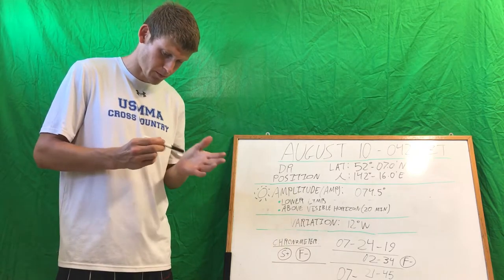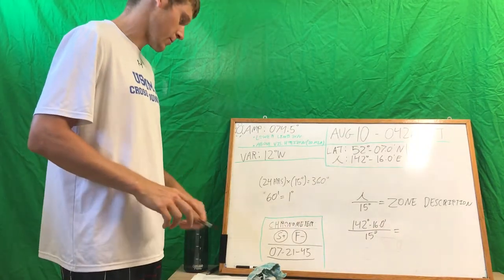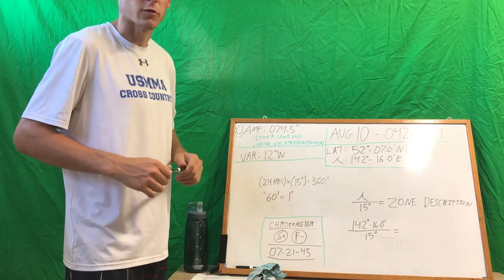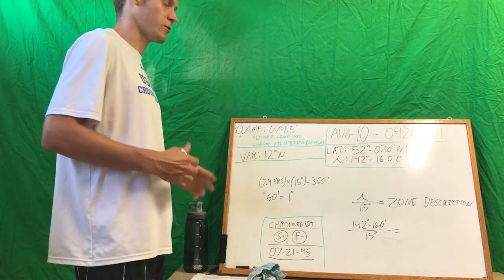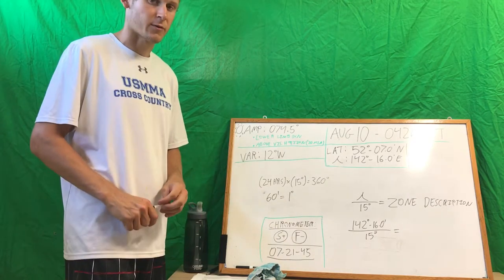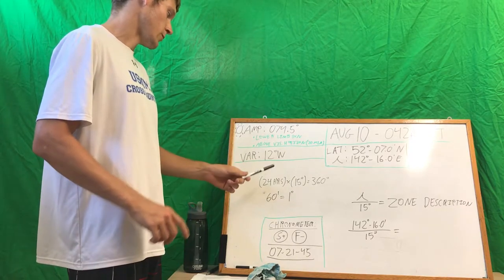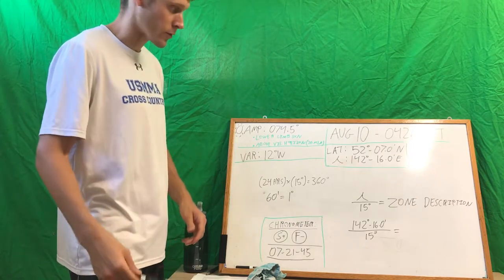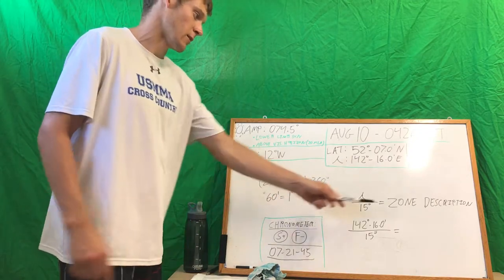Now we need to compare this to our zone time and figure out what our zone time is in reference to Greenwich. To find our zone time in reference to Greenwich, we need to find our zone description. Remember, there are 24 hours in a day; 24 times 15 equals 360 degrees. That's why, to find your zone description, you take your longitude and divide by 15 — that gives you your zone description.